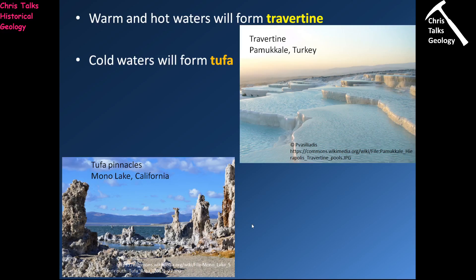However, if your calcium carbonate is coming out of solution from a cold water, you're actually going to form a type of rock referred to as tufa. Here you can see some tufa columns at Mono Lake in California. Tufa is a little more difficult to form, but the key distinction is: travertine is dissolved calcium carbonate coming out of a hot or warm water, and tufa is calcium carbonate precipitating from a cold or ambient water — the kind of water you'd find on the earth's surface under normal conditions.